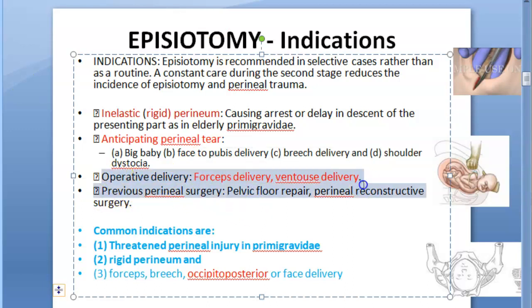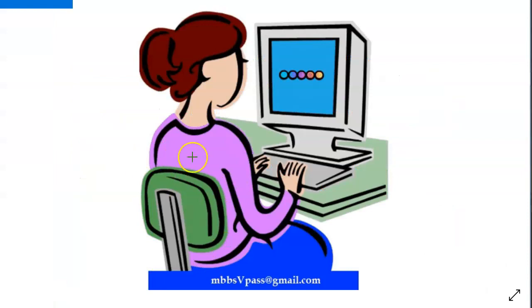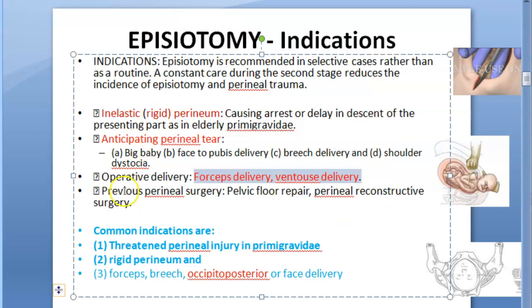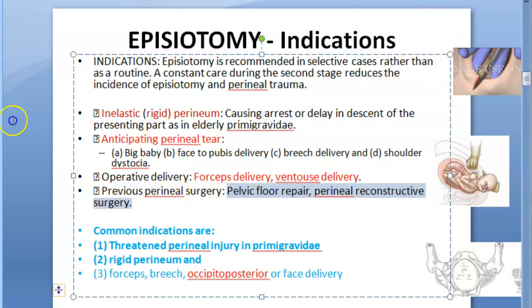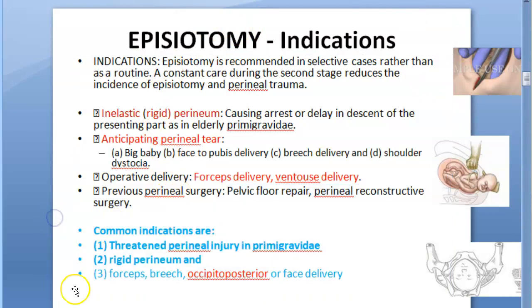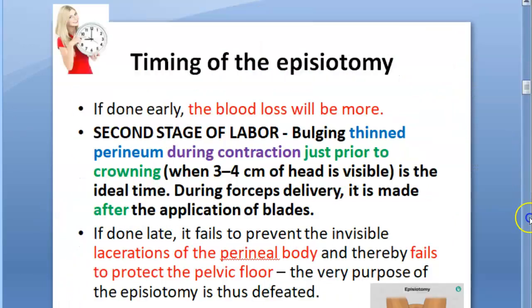Previous perineal surgery is also an indication — if you have repaired a lady's pelvic floor and reconstructed her perineum, you would rather choose an episiotomy than put so much stress on it. Whenever there is a forceps or ventouse delivery, mediolateral is better than median. Common indications: threatened perineal injury and a rigid perineum.